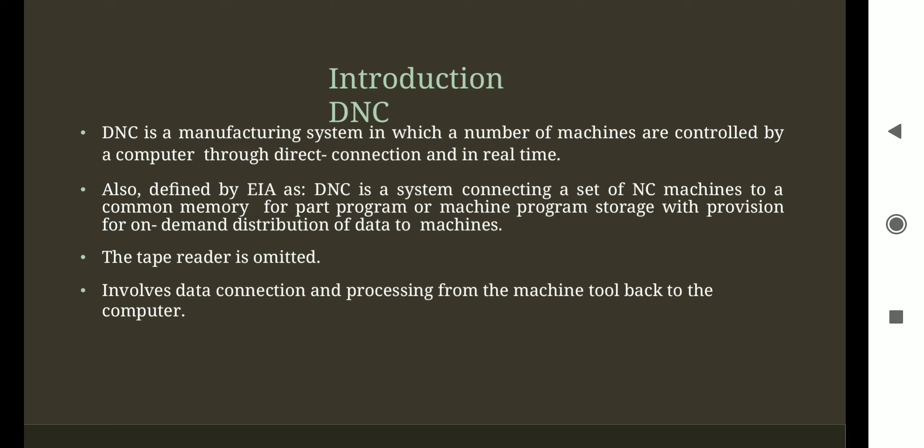DNC is defined as a system connecting a set of NC machines to a common memory for part program or machine program storage, with provision for on-demand distribution of data to machines. The tape reader is omitted in a DNC system — we don't use a tape reader here. The tape reader's role has been taken over by bulk memory.